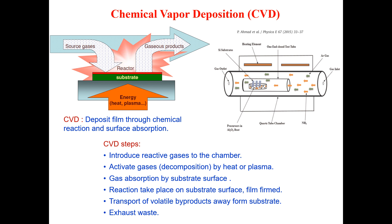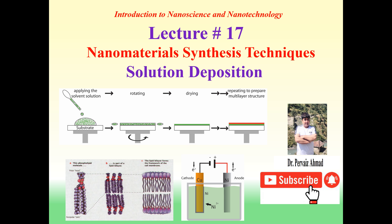This has been a short introduction to chemical vapor deposition. All three techniques — thermal evaporation, sputtering, and CVD — are vapor deposition techniques used for the synthesis of nanomaterials in the form of thin film. In the next lecture, number 17, we will have a discussion on solution deposition techniques for nanomaterials. Stay tuned — till then, bye bye.